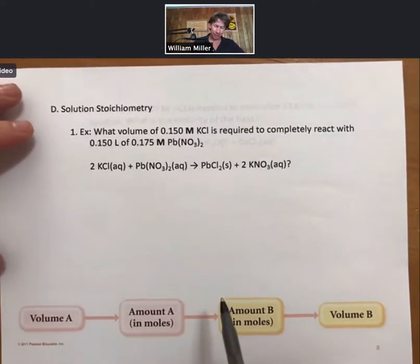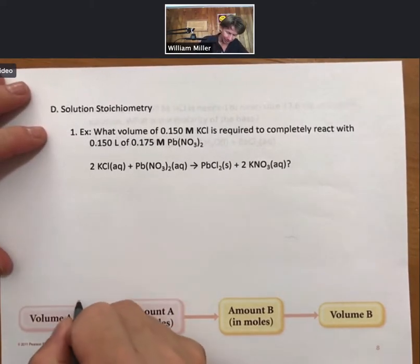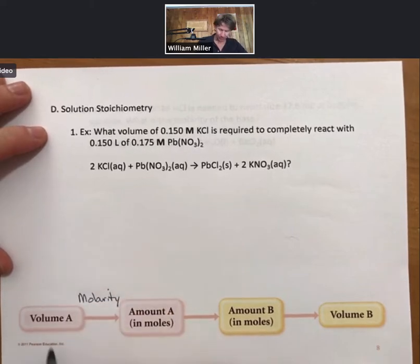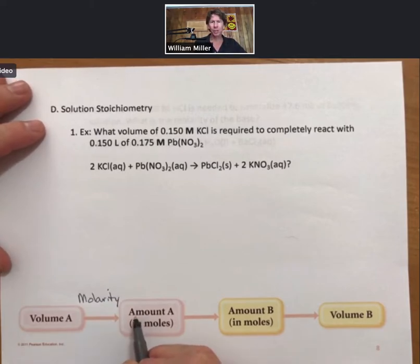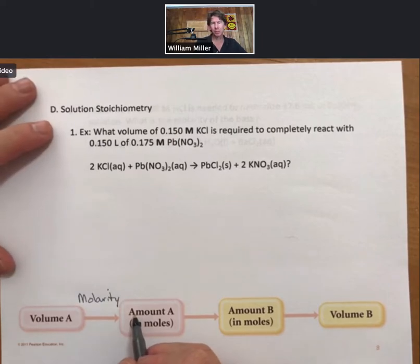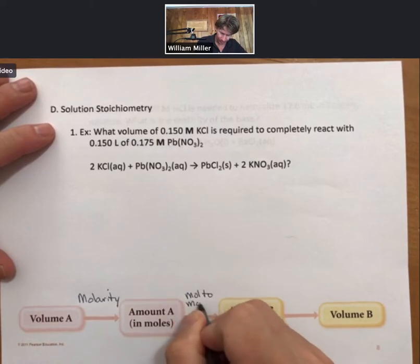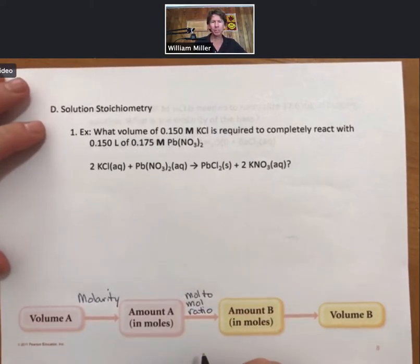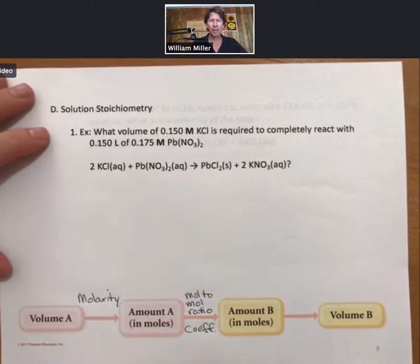Those calculations will typically follow a pattern in which you're given a volume and a molarity, which will allow you to convert that into moles of one substance. You'll then convert moles of one substance into moles of another substance using a mole-to-mole ratio, and the mole-to-mole ratio always involves the coefficients from a balanced reaction.